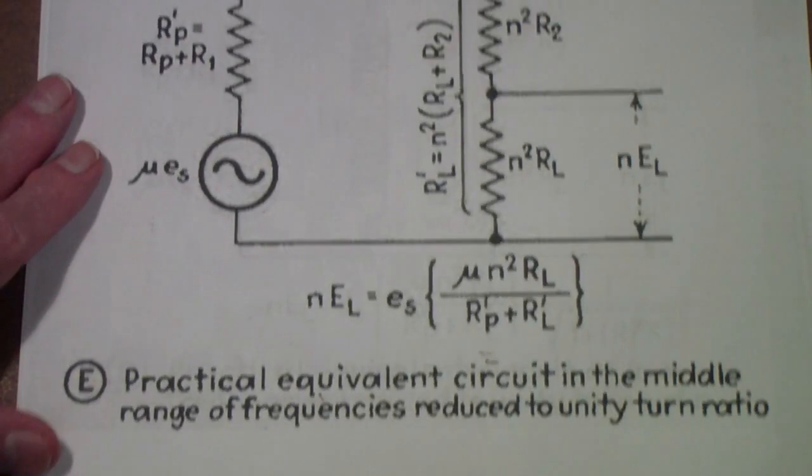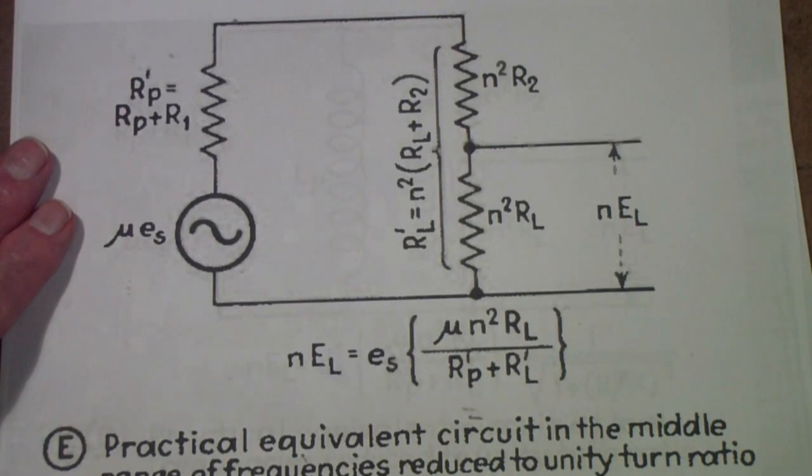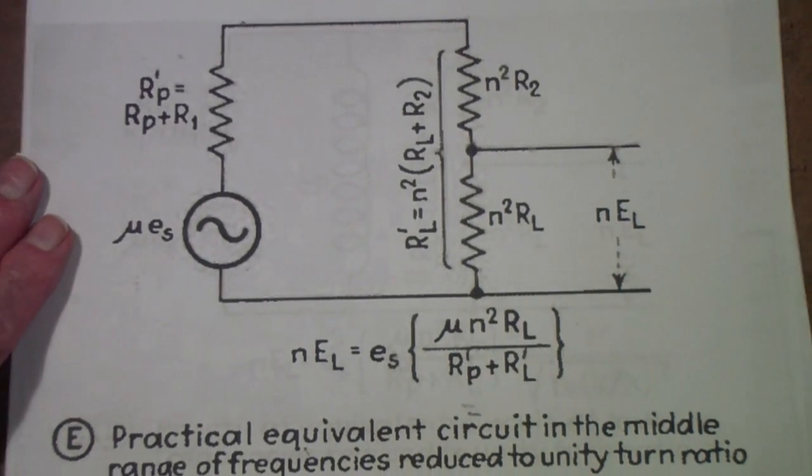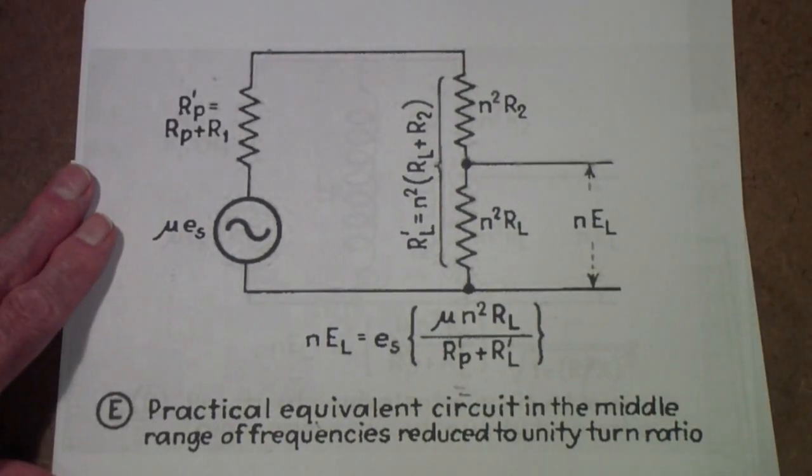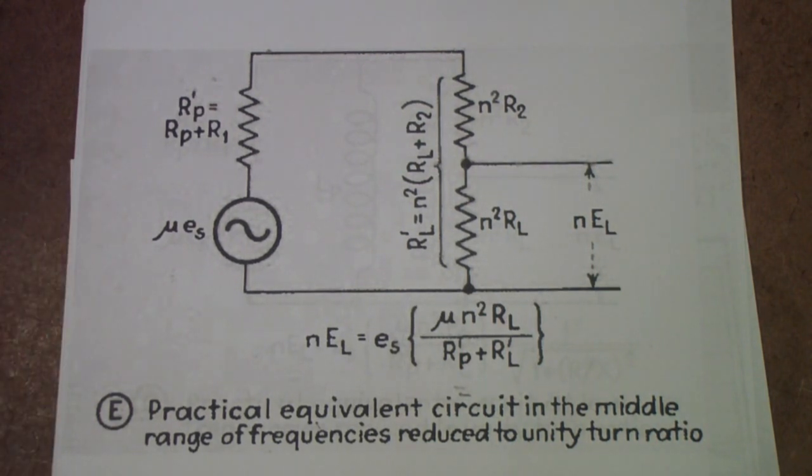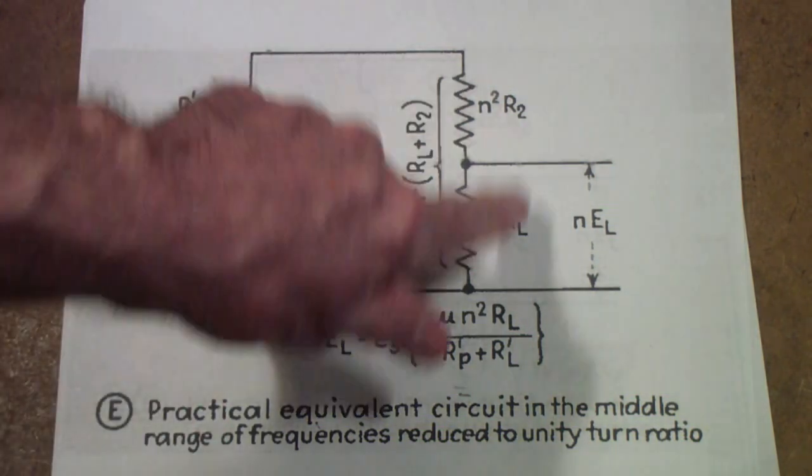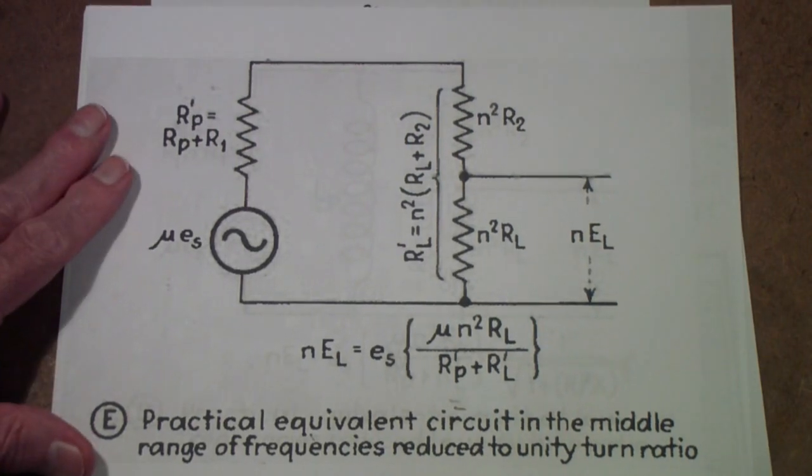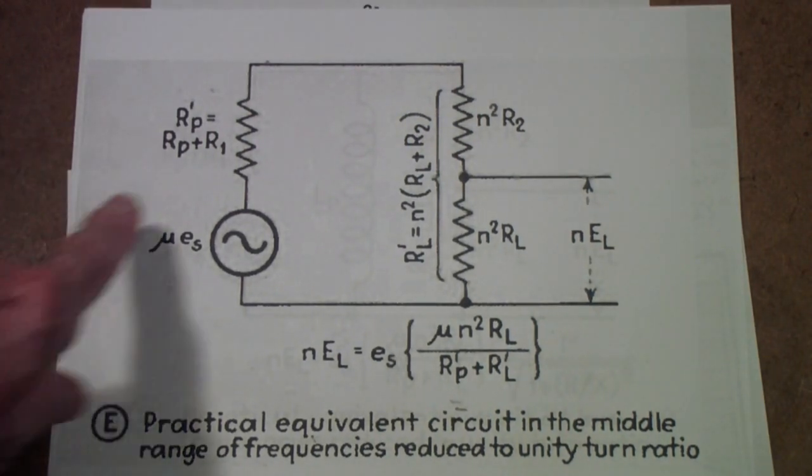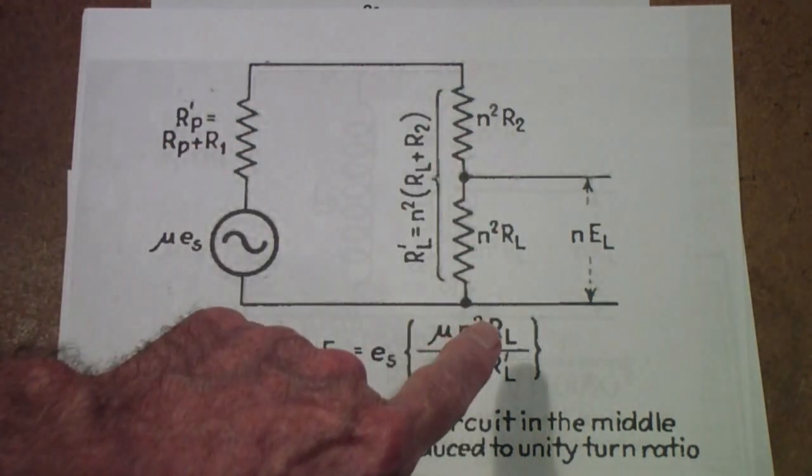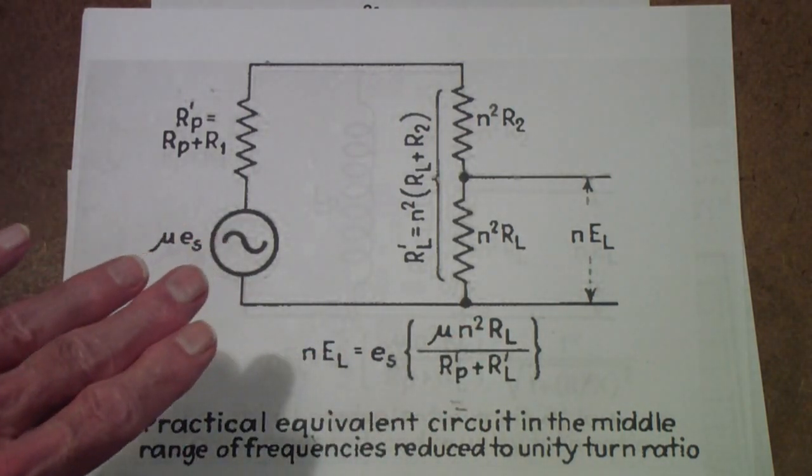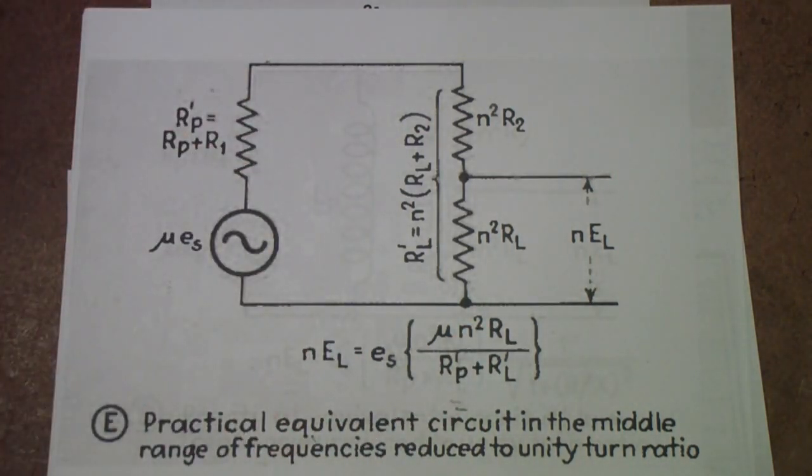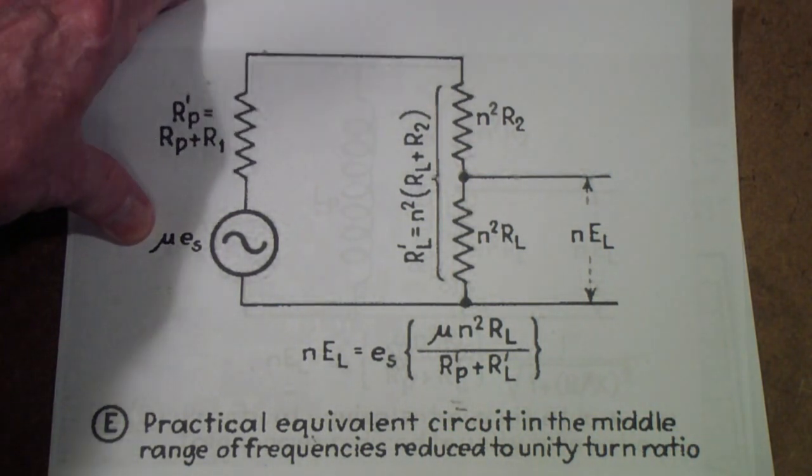Now, this is the equivalent circuit in the middle frequency range. Once again, reduce the turns to unity turns ratio. Notice that it's just resistances, and remember, this is only a model. But what he's showing is that if you compute this model, that will tell you the effective gain of the stage at the middle frequencies.